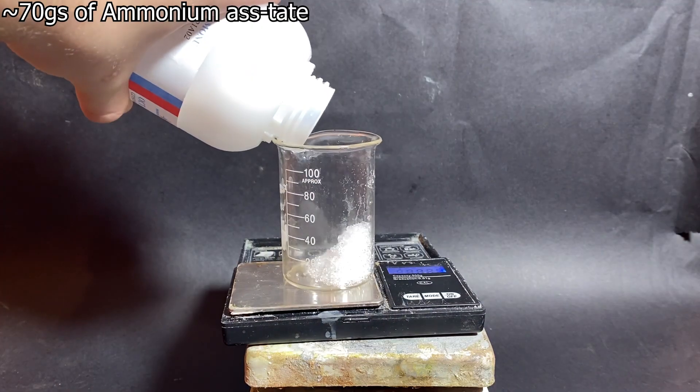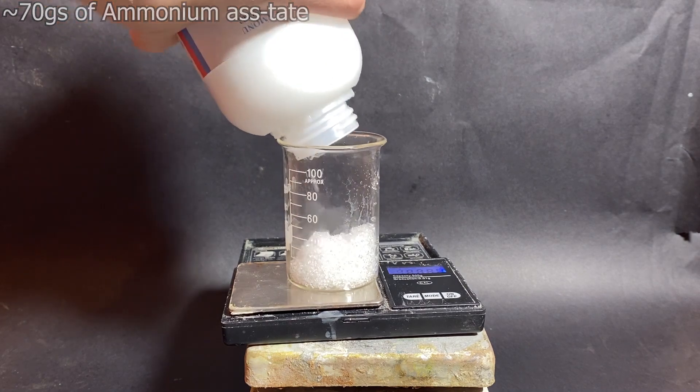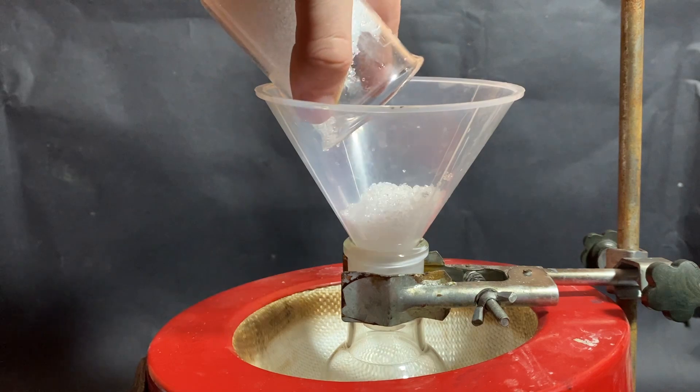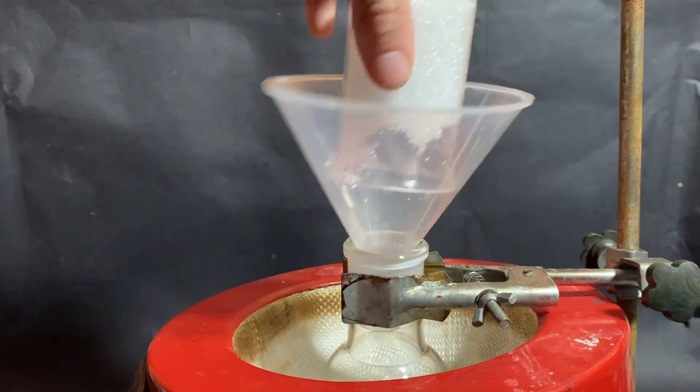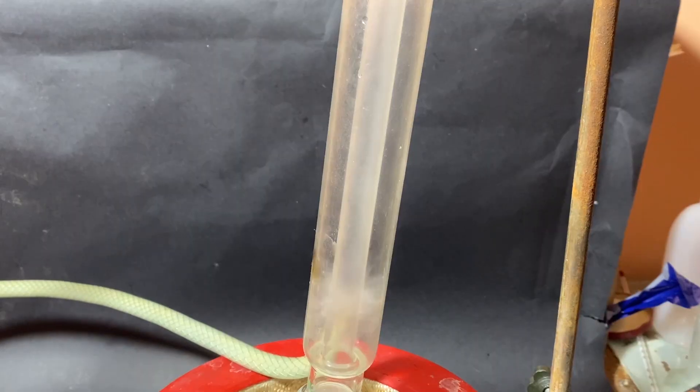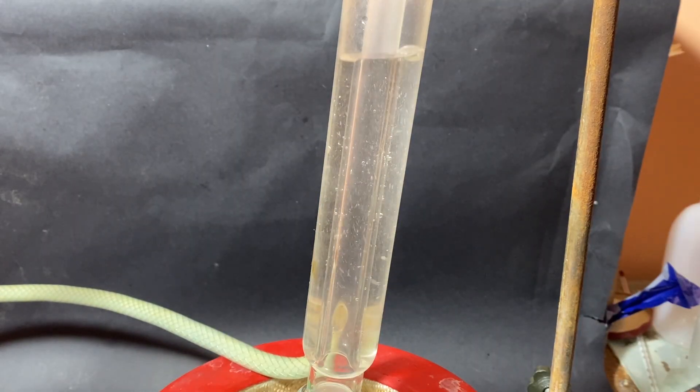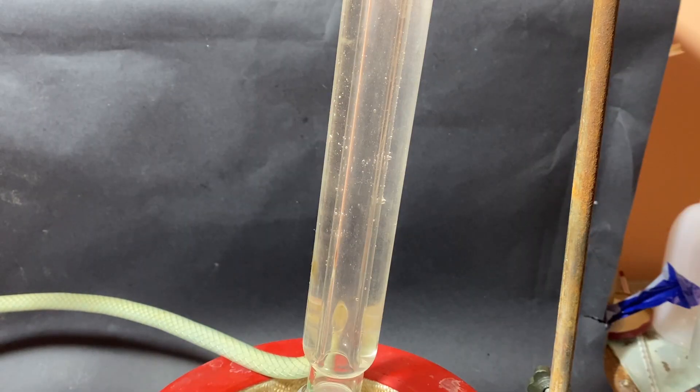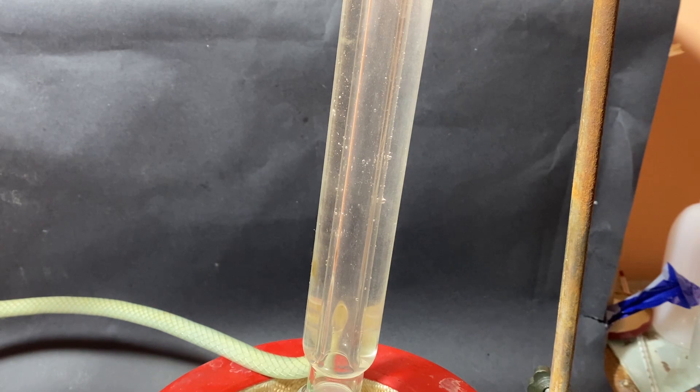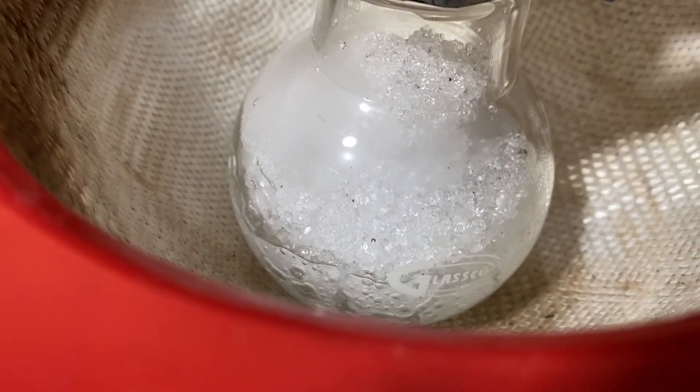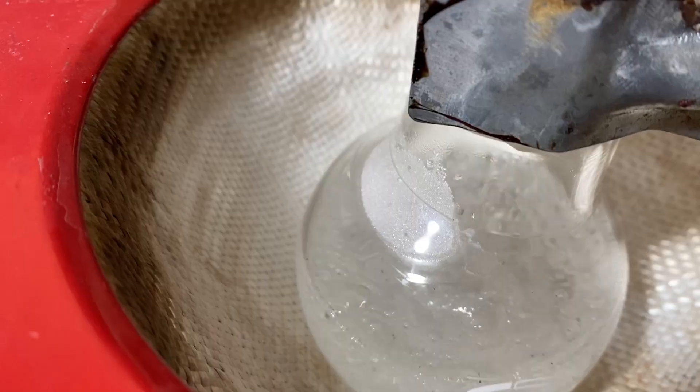So to start off, I've weighed out around 70 grams of ammonium acetate. Then I've added it into a 100ml round-bottom flask that was placed into a heating mantle. A Liebig condenser was attached on top and filled with water. I've cranked the heating mantle to the max. If you know how to chemistry, you probably know we're going to be performing a reflux. As the temperature goes up, the ammonium acetate crystals eventually start to liquefy and they start breaking down.